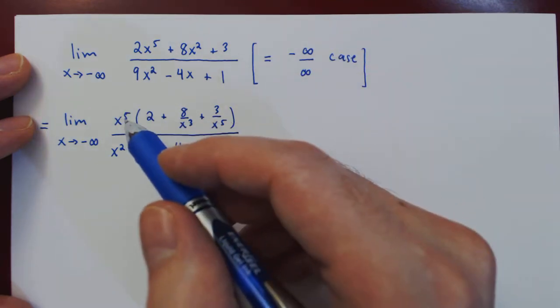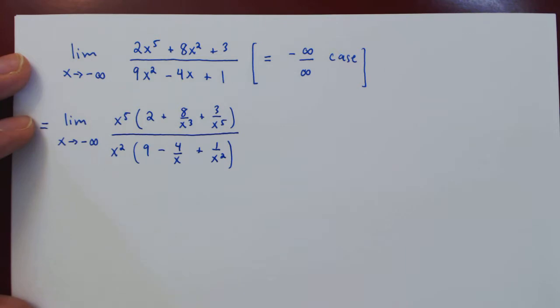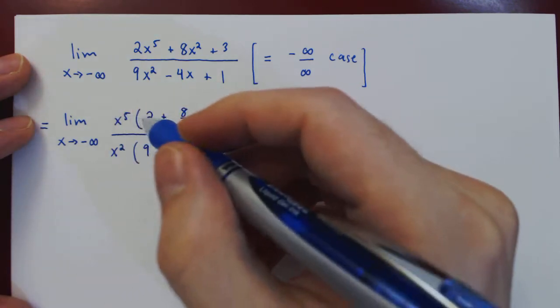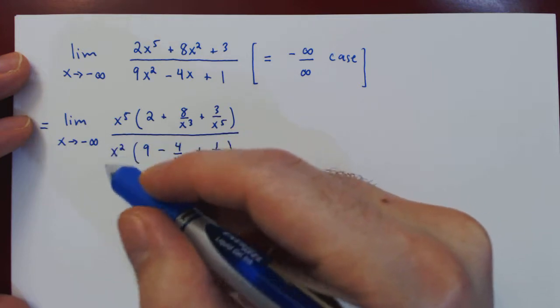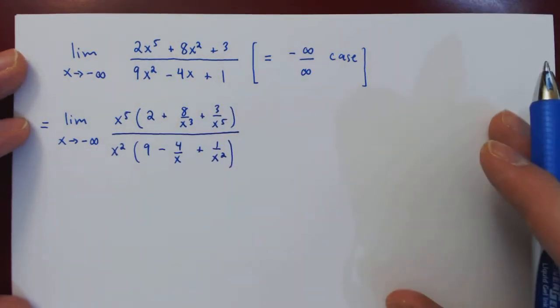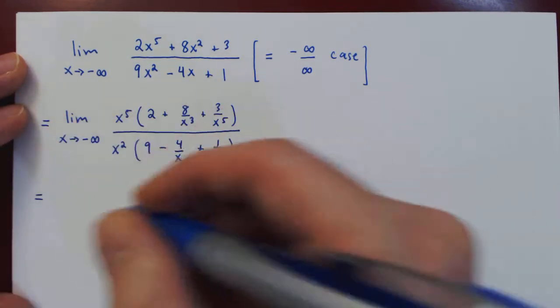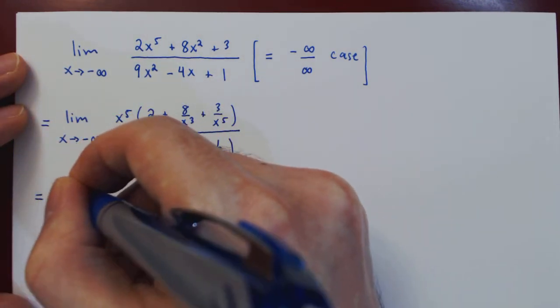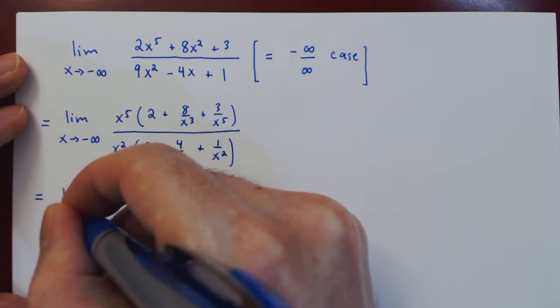So we have a factor of x to some power on top and on the bottom: on top x^5, on the bottom x squared. These simplify to an x cubed on the numerator. If we perform this simplification, let's see what we're left with.